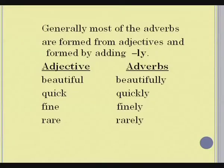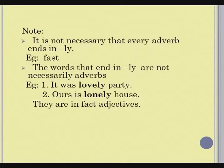Children, I think now you have got a clear idea about adverbs. Would you like to know something more about adverbs? Generally, most adverbs are formed from adjectives by adding -ly. For example: beautiful → beautifully, quick → quickly, fine → finely, rare → rarely. It is not necessary that every adverb ends in -ly. For example, 'fast.' The words that end in -ly are not necessarily adverbs. For example, 'it was a lovely party' and 'ours is a lonely house' — these are in fact adjectives.